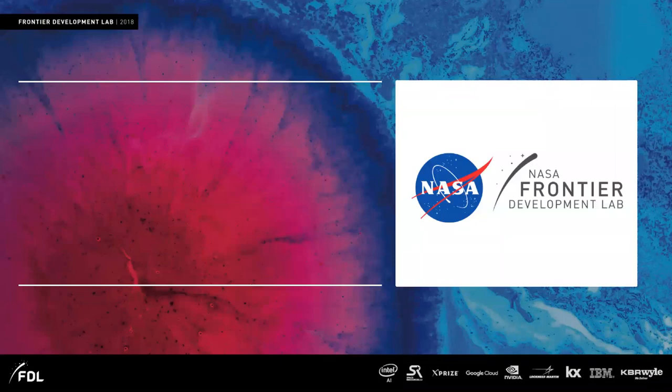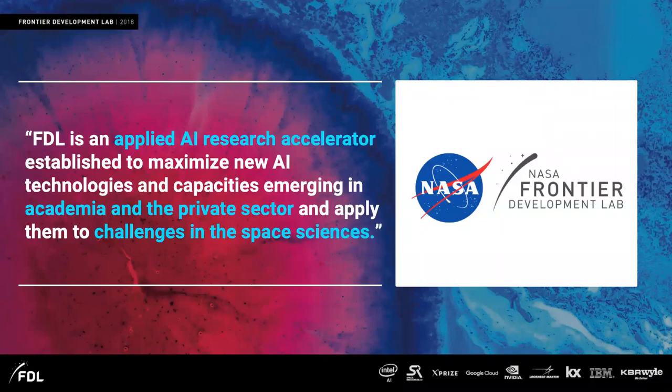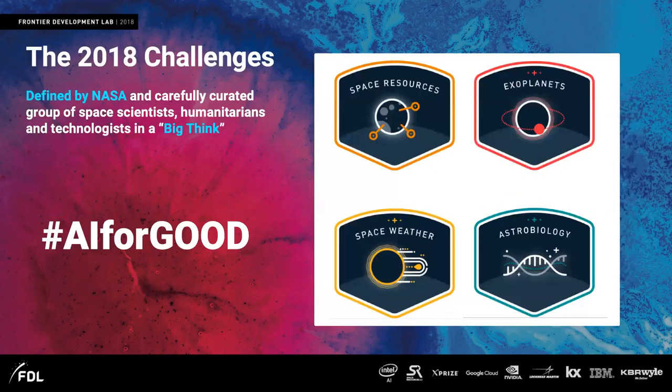Okay. So let's talk about NASA FDL. So NASA FDL is an applied AI research accelerator. It's supposed to bring academia and the private sector together in this public private partnership and work on challenges in space sciences. And all this usually works early in the year. NASA has so-called big think meetings where people think about what challenges are there in the context of NASA, what data sets exist that we could work on with machine learning and AI.